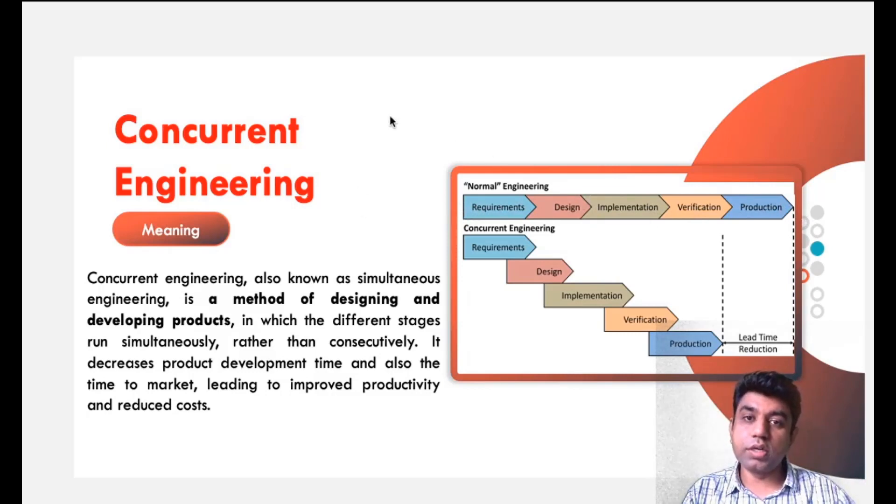What does concurrent engineering mean? That you start all the process early. Once the requirements are coming, you start designing the product according to it. If some requirement has been changed, you go for the change, but you start developing that design initially. Start that event early.